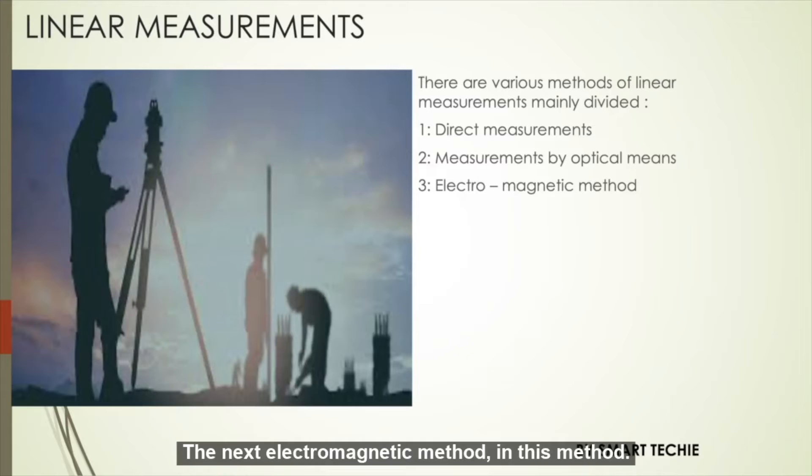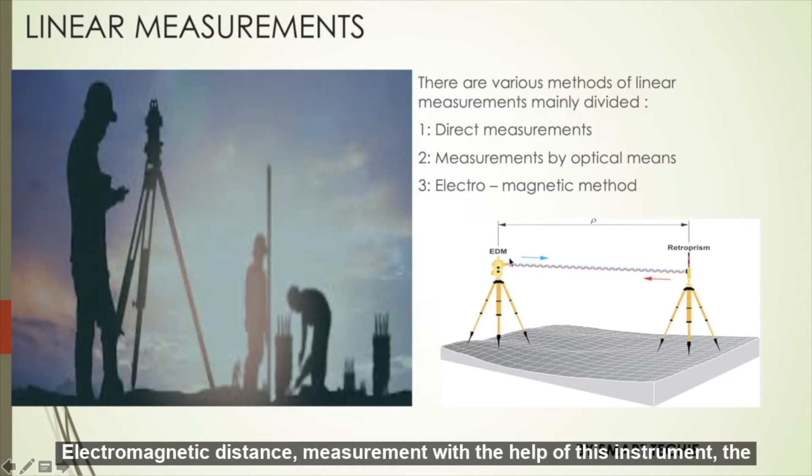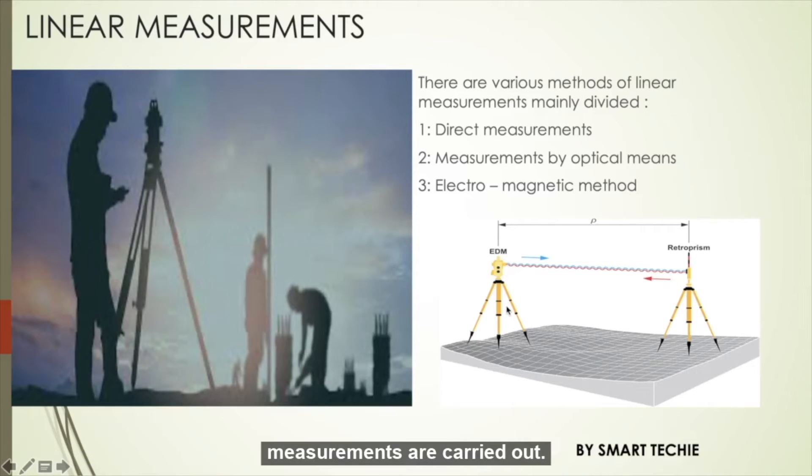Next, electromagnetic method. In this method, distances are measured with the help of light waves, infrared waves or reflections. And in this method, an instrument is used called as electromagnetic measurement. With the help of this instrument, the measurements are carried out.